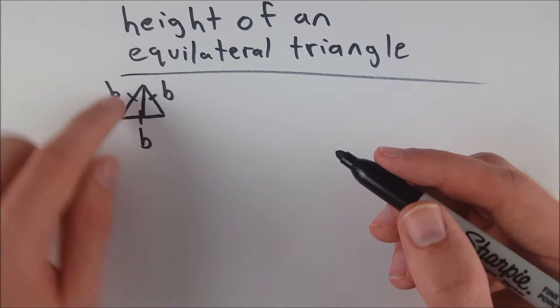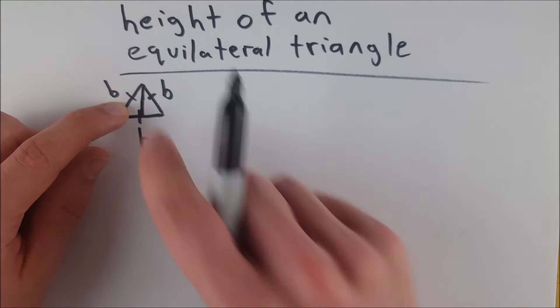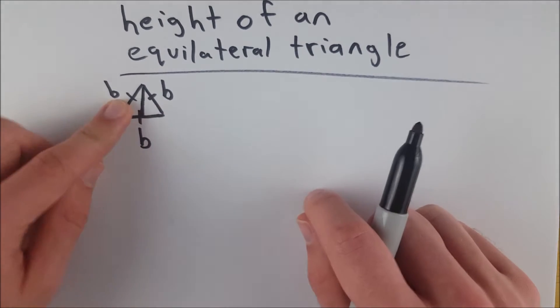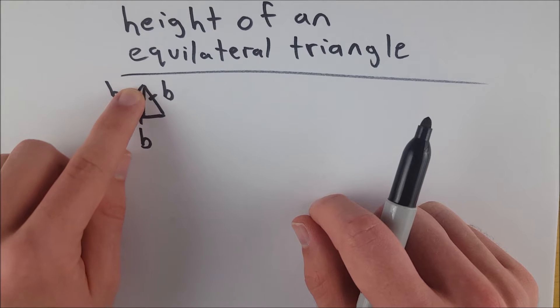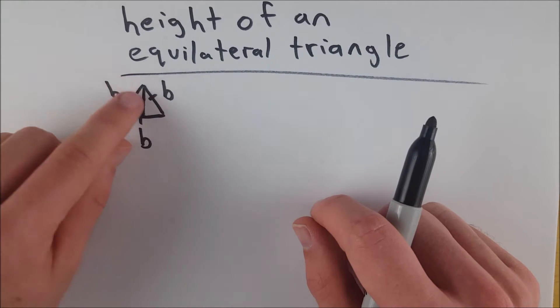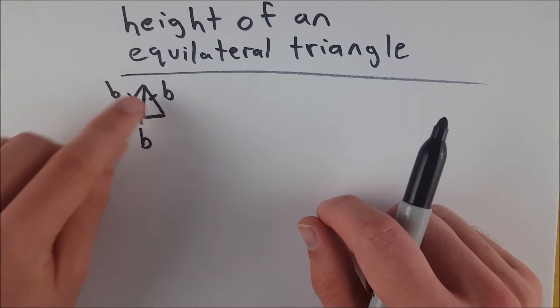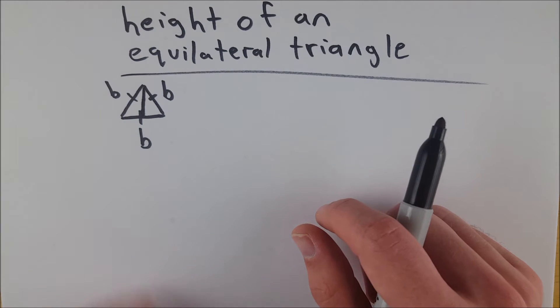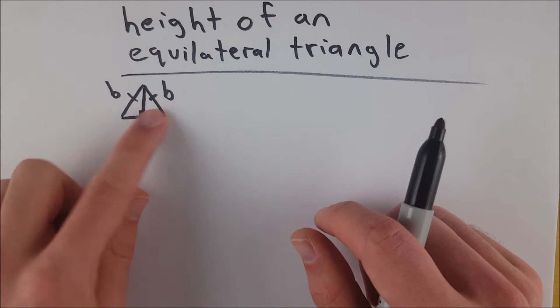How do we know they're congruent? Because of side angle side. So we know that this side is congruent to this side, because it's an equilateral triangle. We know that this angle in here is congruent to this angle in here, because we bisected the angle. And then we know that this side is congruent to itself, because congruence is reflexive. So we've got two congruent triangles here.